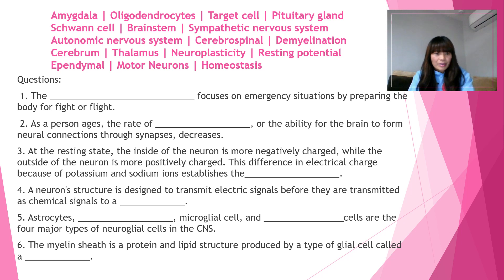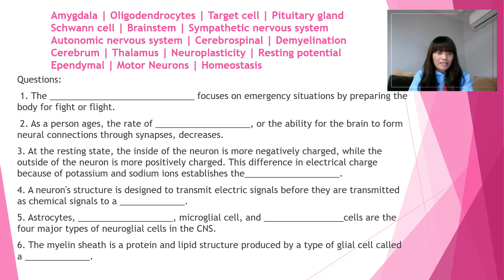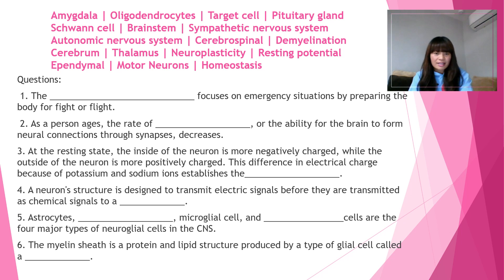Number five: astrocytes, blank, microglial cell, and blank cells are the four major types of neuroglial cells in the CNS. There will be two answers for number five. The answers are oligodendrocytes and ependymal — so astrocytes, oligodendrocytes, microglial cell, and ependymal cells are the four major types of neuroglial cells in the CNS.